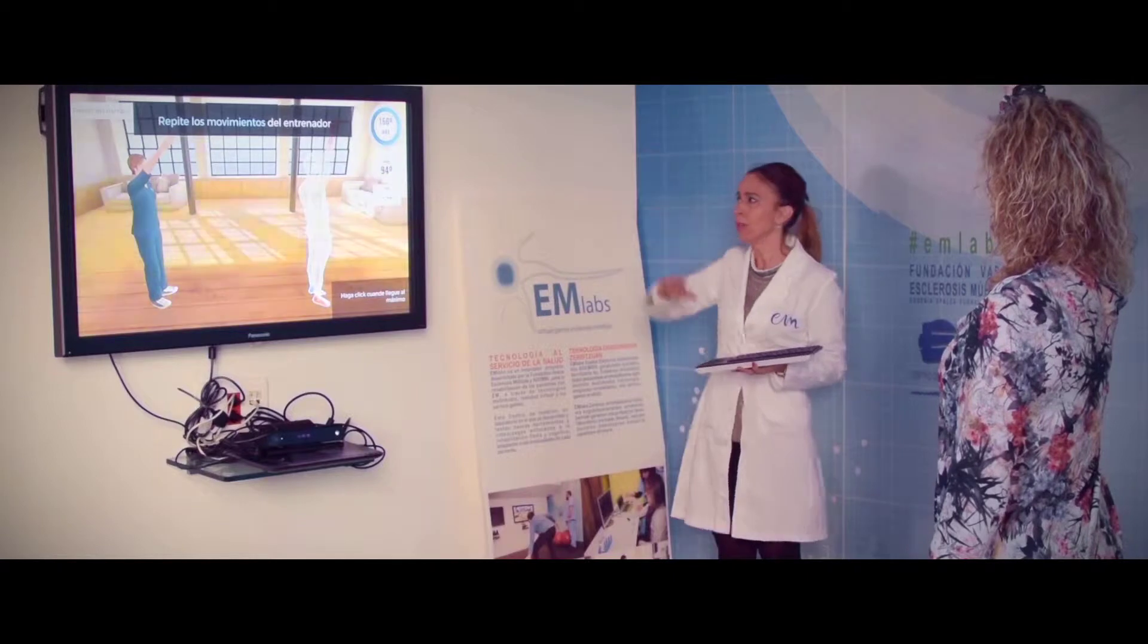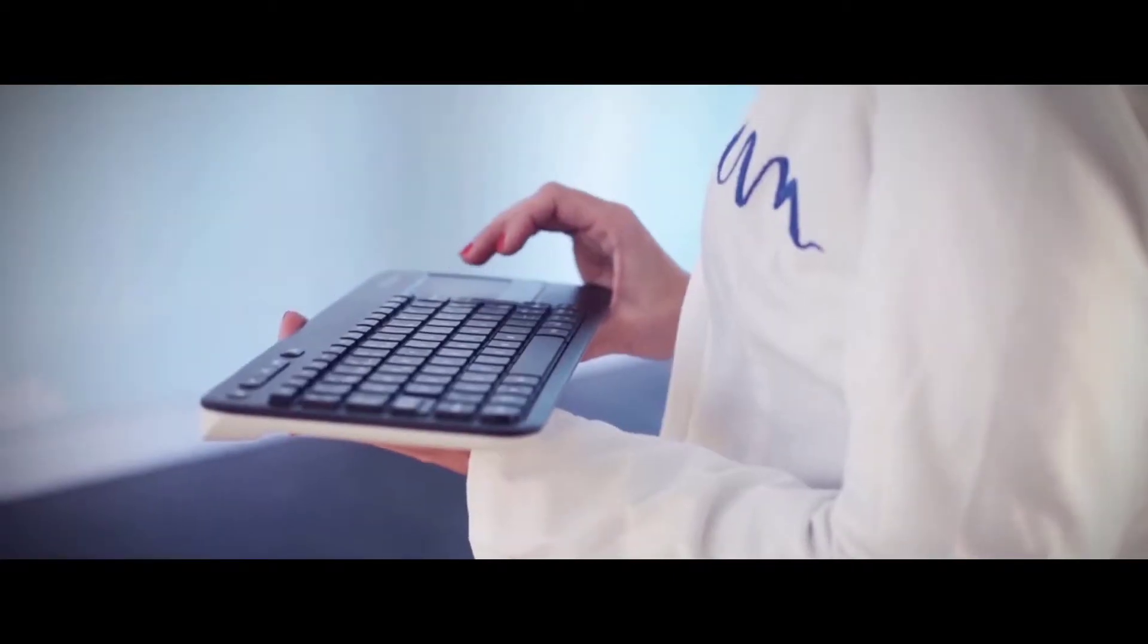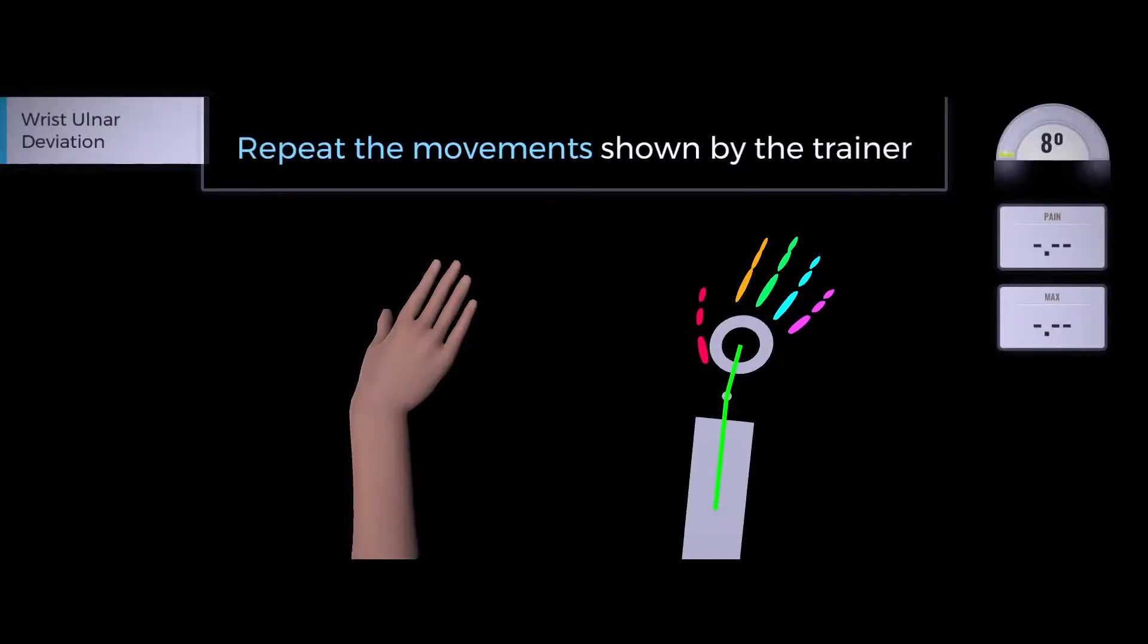Virtual Rehab includes an assessment module for measuring range of motion of upper and lower limbs as well as hands, allowing therapists to measure and record patient outcomes over time that can later be used for reimbursement purposes.